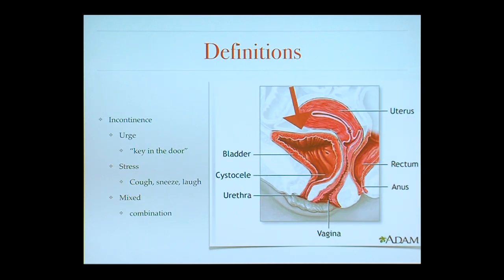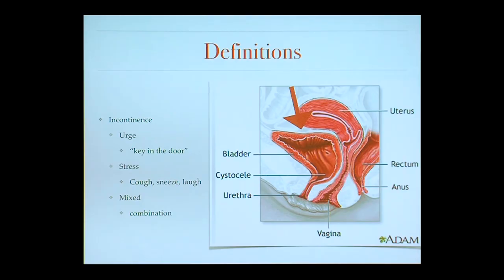With stress incontinence, patients will describe leakage when they cough, sneeze, or laugh — when they're jumping on the trampoline with their kids or grandkids, or chasing after someone. That's usually due to intra-abdominal pressure. And then there's also mixed incontinence, which can be a combination of both.